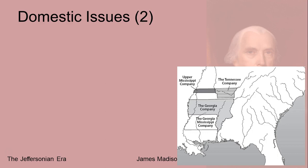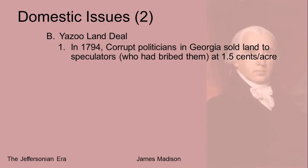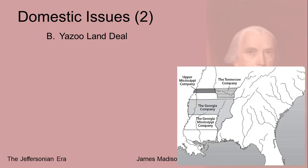The second thing going on in James Madison's administration is an ongoing controversy called the Yazoo Land Deal. It originated with Georgia in 1794. The state of Georgia sold land out in its western territories for one and a half cents an acre. If you look at the map, this is the area — modern-day Georgia is here, but in 1794 this was also part of Georgia.